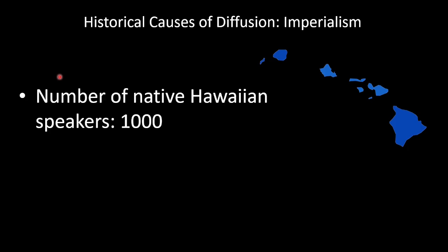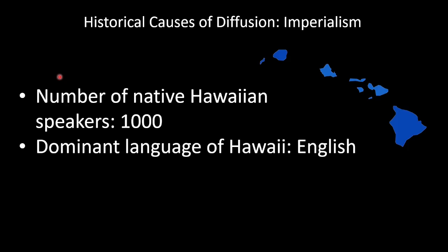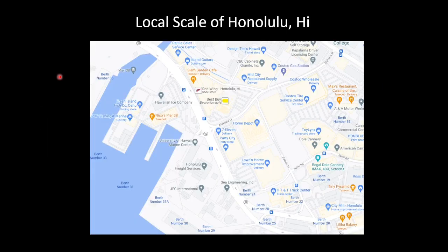The number of native Hawaiian speakers is 1,000, which is a lot lower than it was in 1898, and has decreased over time. The dominant language of Hawaii is English, because it's primarily American and part of the United States of America, which does not have an official language, by the way. At a local scale of Honolulu, we see a bunch of popular culture and globalization in the islands. I can see Home Depot, Lowe's, 7-Eleven, Party City — things I've seen here in the United States that are also in Hawaii.